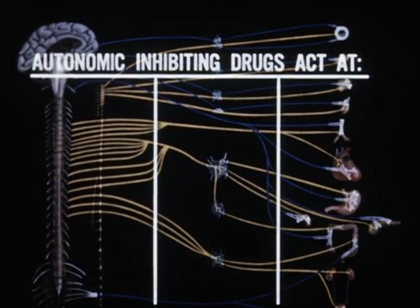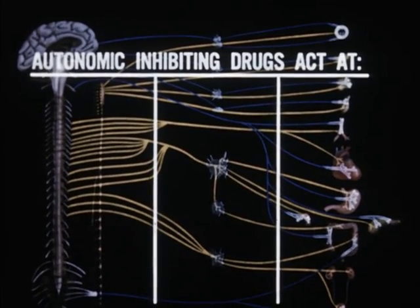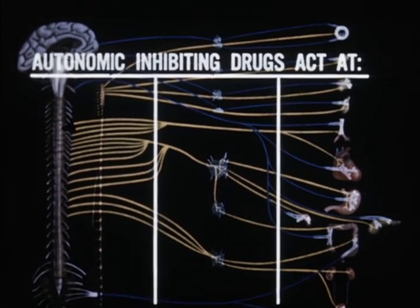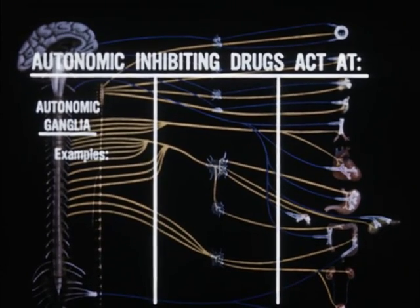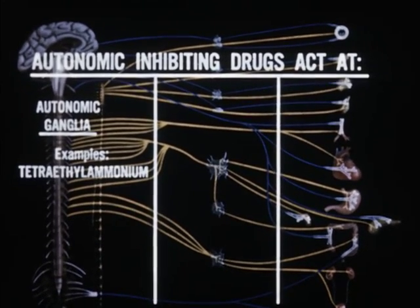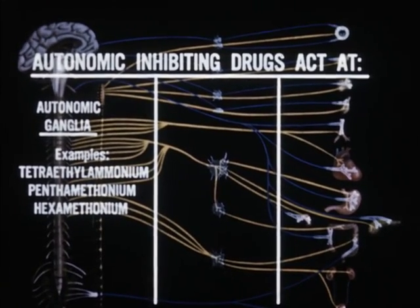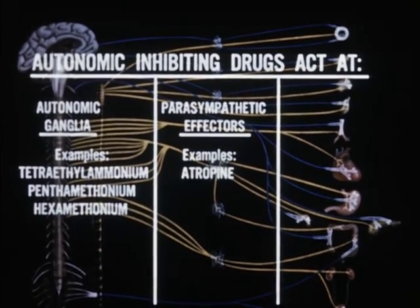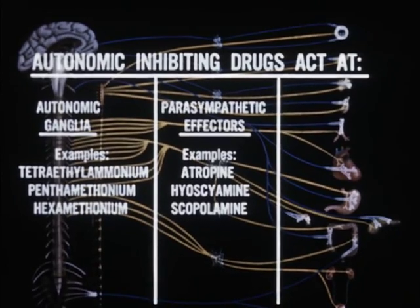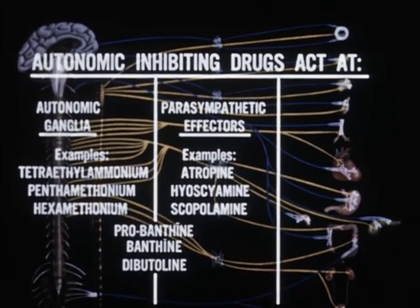Inhibiting agents, or blocking agents, also act at one or more of three possible sites, but their action is usually that of competitive combination, so that the normally occurring mediator does not cause stimulation. Examples of drugs which block at the ganglia are tetraethylammonium, pentamethonium, and hexamethonium. Examples of drugs which block or inhibit only at the parasympathetic effectors in usual dosage are atropine, hyoscyamine, and scopolamine. A few act both at the ganglia and at the parasympathetic effectors. Such drugs are probanthine, banthine, and dibutylene.